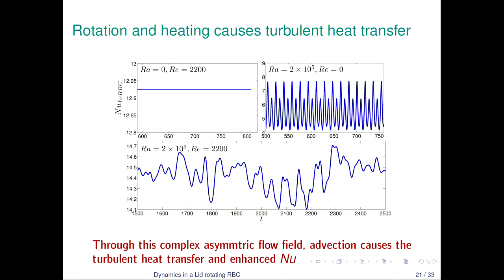We also looked at the time evolution of the modified Nusselt number. For just rotating the top plate without any heating, the Nusselt number is a steady value — pure forced convection without natural convection. Without any rotation, the classical Rayleigh-Bénard system at Rayleigh number 2×10⁵ shows periodic oscillations in heat transfer. However, for both Rayleigh number 2×10⁵ and Reynolds number 2200, turbulent fluctuations appear in the Nusselt number. This indicates that advection in such a complex flow field causes turbulent fluctuations and is responsible for the enhanced heat transfer.